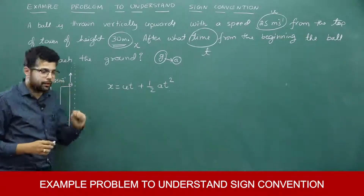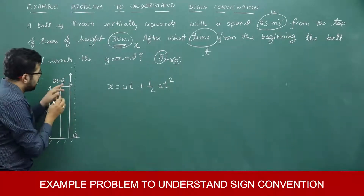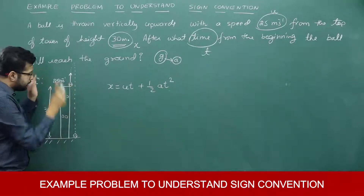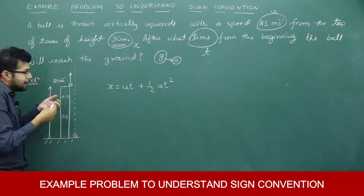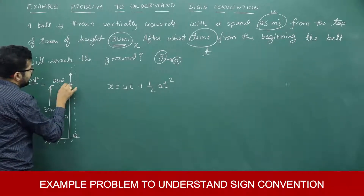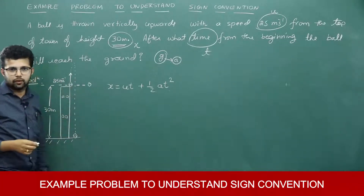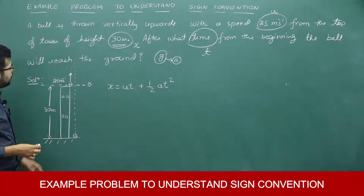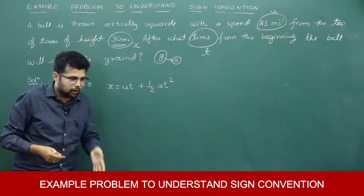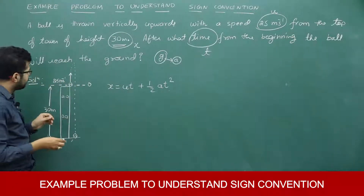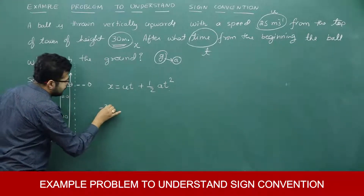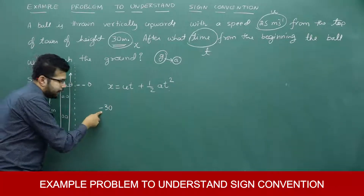X means displacement. Initially the ball was on the top of the tower; finally the ball is on the ground. The net displacement is downward. I will take the point of projection as the origin. From sign convention, if the displacement is downward it is taken as negative. So the ball is coming downwards by 30 meters, and since displacement is downward, x = −30.